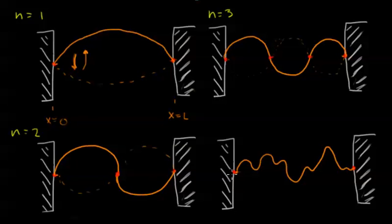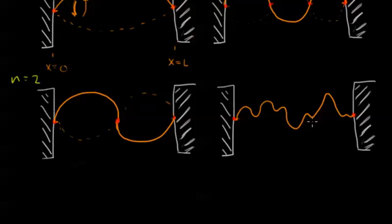So we've found our standing waves by solving our wave equation with these boundary conditions. But what about something like this? This satisfies our boundary conditions — it's zero at both ends, and it's not broken anywhere or coming to a perfectly sharp point. So this function, at least in x, satisfies our wave equation. So what's the deal with this more complicated shape?